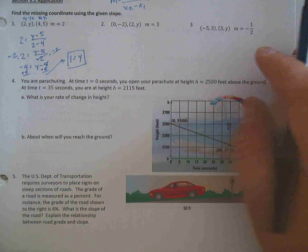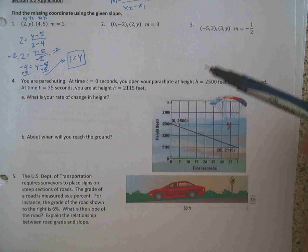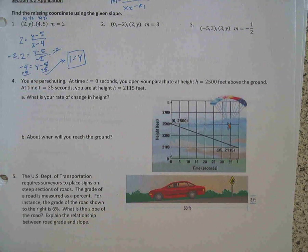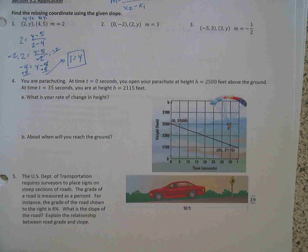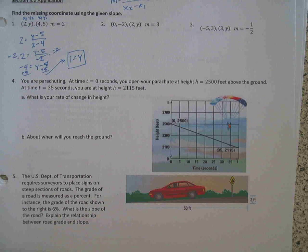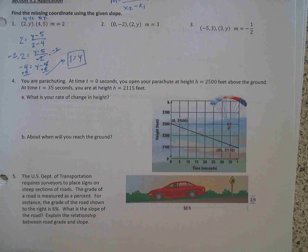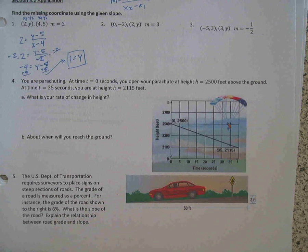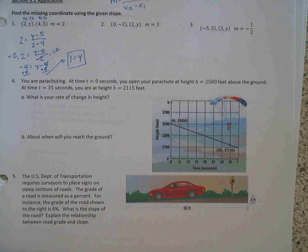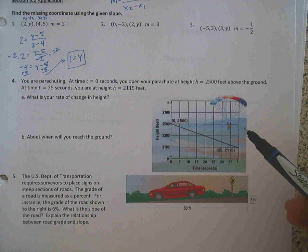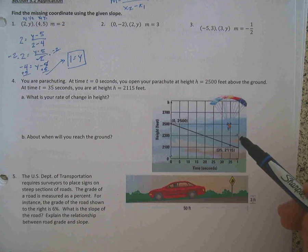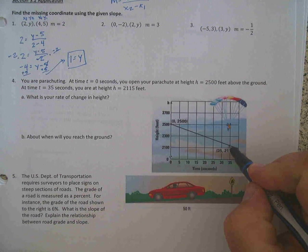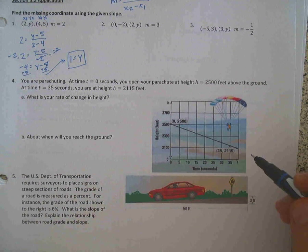Okay, let's look at the next problem. So it says you're parachuting at t equals 0 seconds. You open your parachute at a height of 2,500 feet above the ground. And at t equals 35 seconds, you're at a height of 2,115 feet. So that's this point right here. Use this graph, it definitely helps.